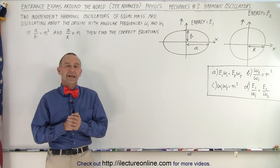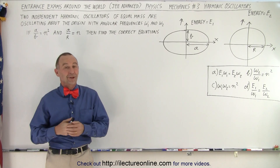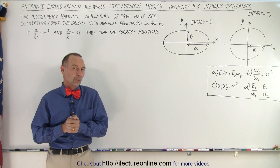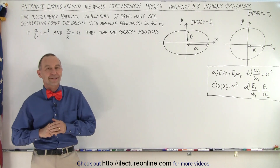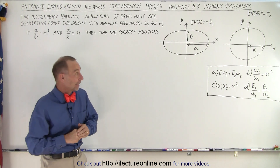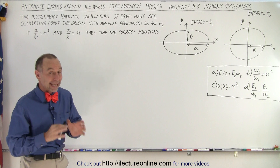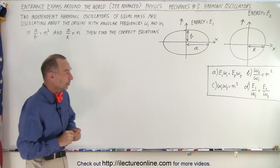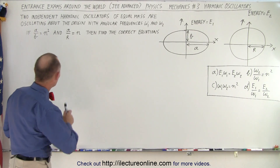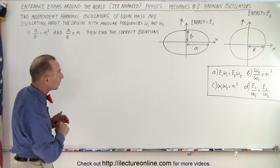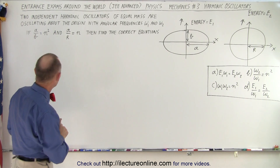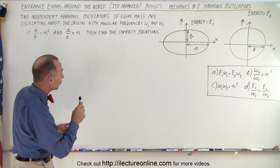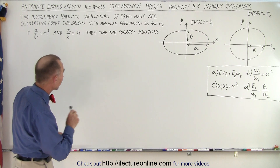Welcome to Electronline. Here we have another challenging problem out of an entry test around the world, in this case JEE Advanced. It's a physics problem dealing with mechanics and specifically with two harmonic oscillators. We have two independent harmonic oscillators with equal mass, oscillating about the origin with angular frequencies omega 1 and omega 2.